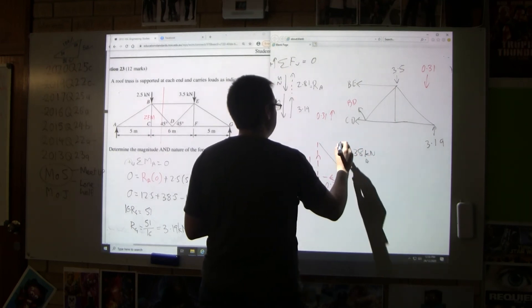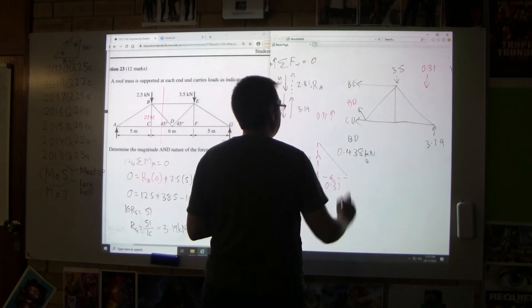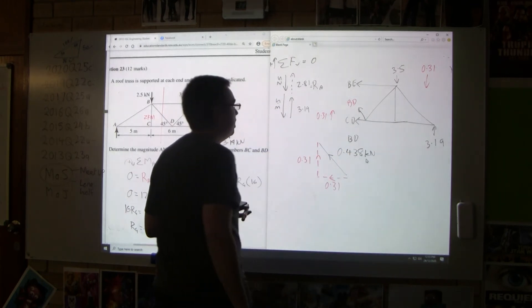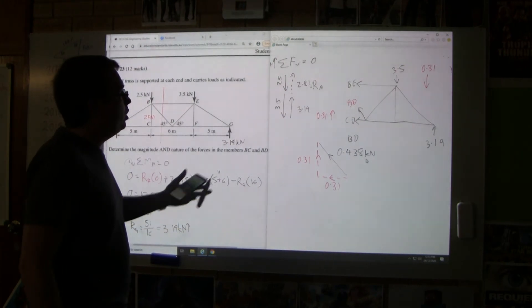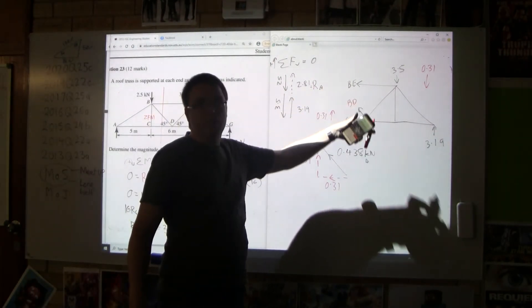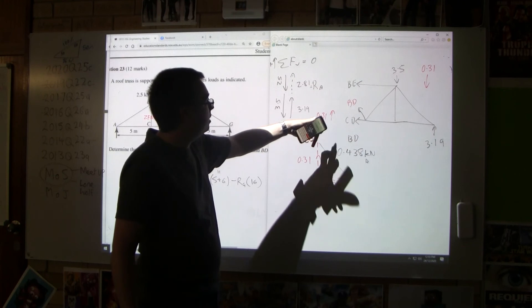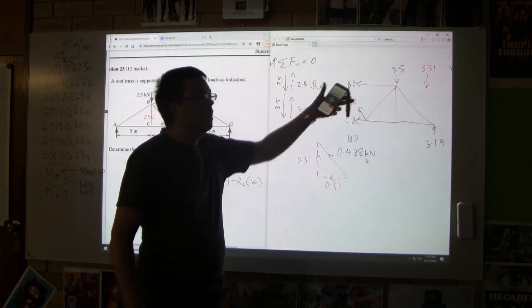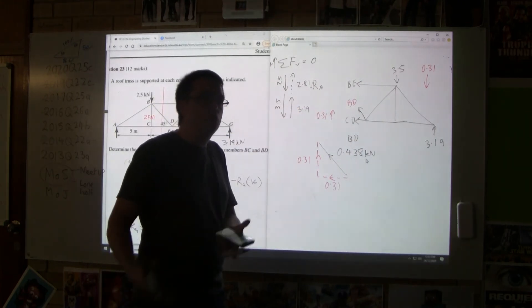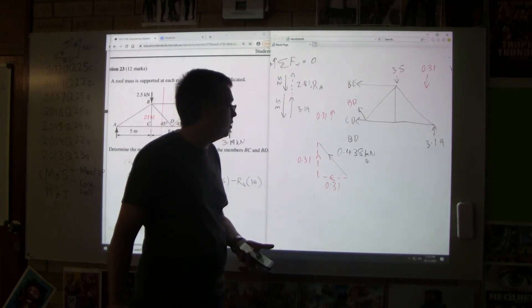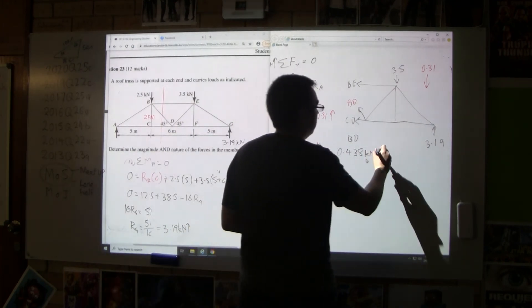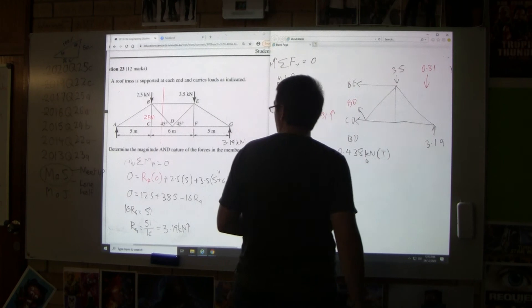Now that's BD. The question is, is it in tension or compression? We drew this diagram and we drew everything in tension. And this here is said go up, and it is up. So it means that what we drew originally, our assumed forces, is correct. So we can then say it's in tension.